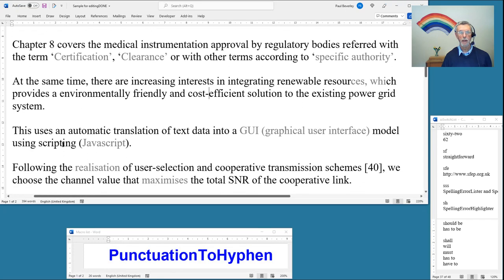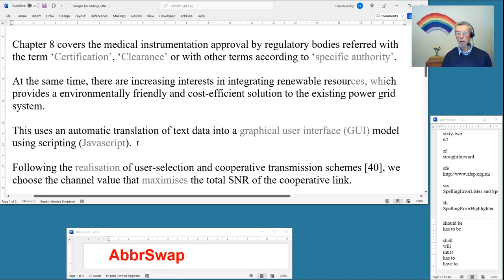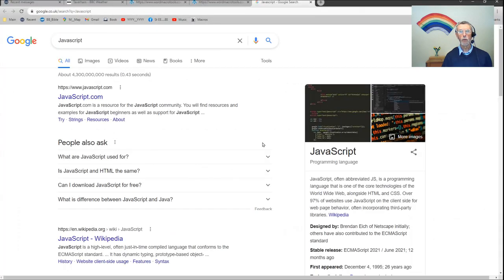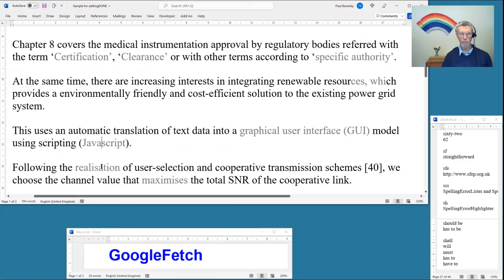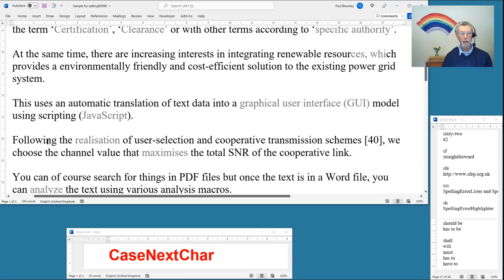This uses an automatic translation. Oh, that's an abbreviation the wrong way around, so we swap that. GUI model using scripting Javascript. I think Javascript should have a capital S. Let's just check, so we'll do a Google fetch. Yes, Javascript, yes should be capital S. Okay, so Javascript capital S.